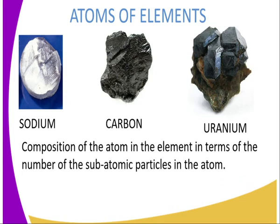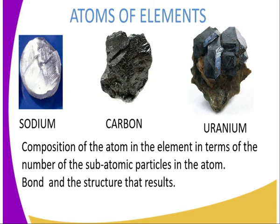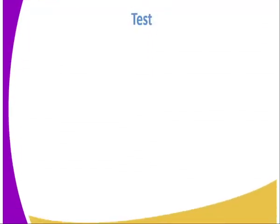The composition of an atom in terms of the number of subatomic particles gives us the different types of elements that exist. These atoms bond differently, giving us different types of structures, and the compounds formed also have different properties. This is basically the study of chemistry — the study of the composition, structure, and the changes that matter undergoes.